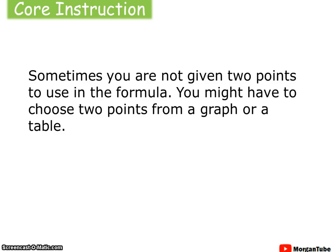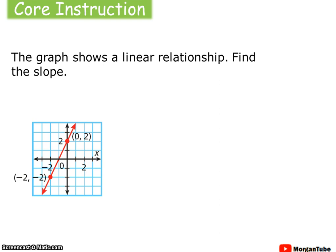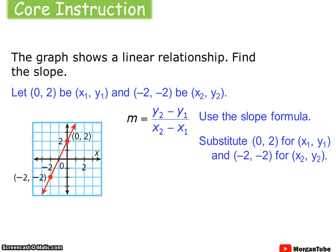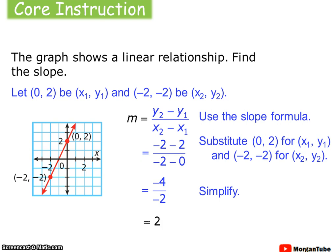Sometimes you're not given two points to use in the formula, so you might have to choose two points from a graph or from a table. If I gave you this graph and you had to find the slope using the slope formula, I can pick two definitive points. I'm going to pick the y-intercept here, (0, 2), and then it looks like the line clearly goes through (negative 2, negative 2). Plugging those into the formula — subbing (0, 2) for x1 and y1, and (negative 2, negative 2) for x2 and y2 — the difference of y's over our difference of x's gives us a slope of 2. I can confirm that: if the slope is 2, that means we're going up 2 over 1, which is certainly confirmed with our rise-over-run method.